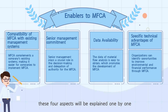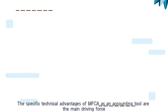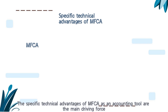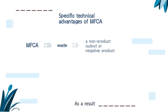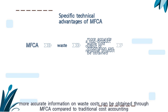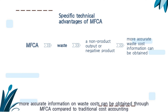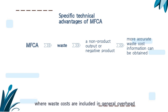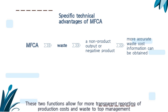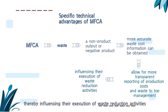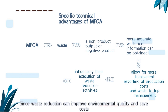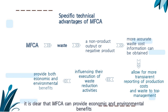The specific technical advantages of MFCA as an accounting tool are the main driving force. MFCA treats waste as a non-product output or harmful product with its own cost. As a result, more accurate information on waste costs can be obtained through MFCA compared to traditional cost accounting, where waste costs are included in general overheads. These functions allow for more transparent reporting of production costs and waste to top management, thereby influencing their execution of waste reduction activities. Since waste reduction can improve environmental quality and save costs, MFCA can provide both economic and environmental benefits.